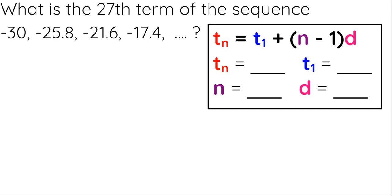In this sequence here, the very first thing I want to do is look at my formula, t sub n equals t sub 1 plus n minus 1 times d, and just identify the different parts. So let's look at my first term. The very first term that I'm starting with is negative 30. I want to find the 27th term, so I don't know my term, but the number of terms is 27.